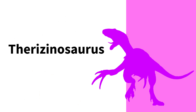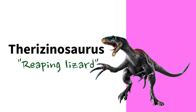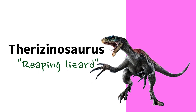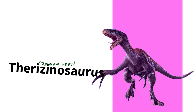Therizinosaurus. Reaping lizard. This name refers to the long, curved claws on the dinosaur's hands, which were likely used for gathering food or defense.